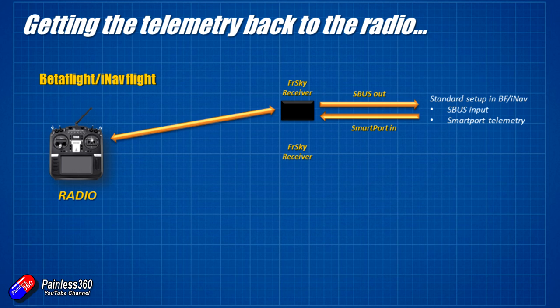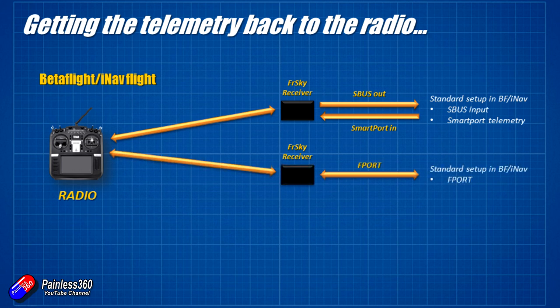The second way is to use F-Port with FrSky receivers that support it. F-Port is a bi-directional protocol, so not only does it send all the control inputs into the flight controller, the flight controller can send all the telemetry back. That's a much easier way to configure it.